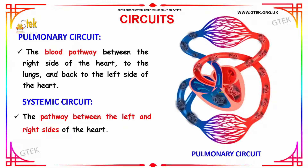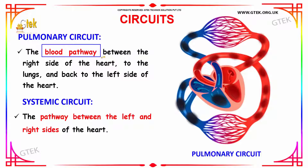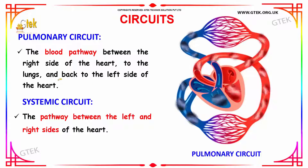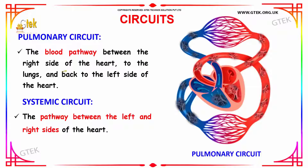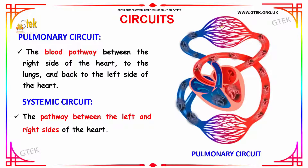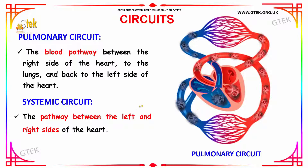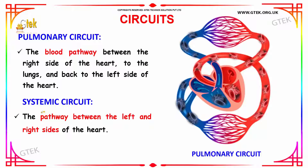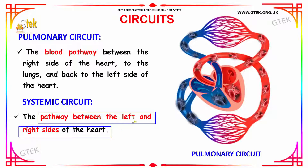Let us see about the circuits. The pulmonary circuit is the pathway between the right side of the heart to the lungs and back to the left side of the heart — where blood is purified in the lungs and pure blood is pumped out from the left side. The systemic circuit is the pathway between the left and right sides of the heart and does not include the lungs.